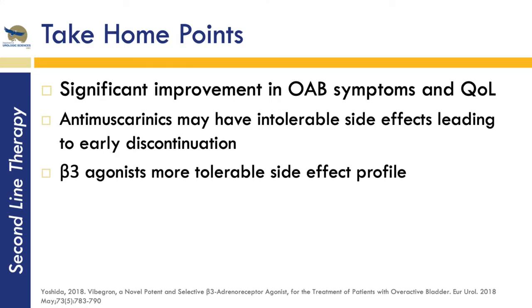Take-home points for pharmacological therapies: anti-muscarinics and beta-3 agonists have significant improvements in OAB symptoms and quality of life. But anti-muscarinics often have an intolerable side effect profile that can lead to early discontinuation. Beta-3 agonists have a more tolerable side effect profile, but at this current state they are not always covered by drug plans and are quite a bit more expensive — especially mirabegron, which is currently the only one available in many markets.